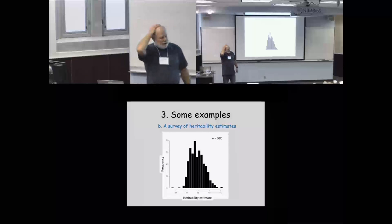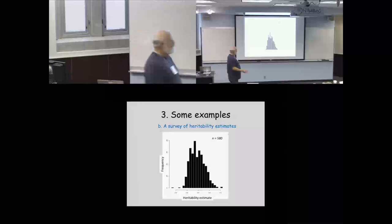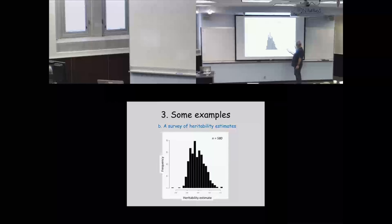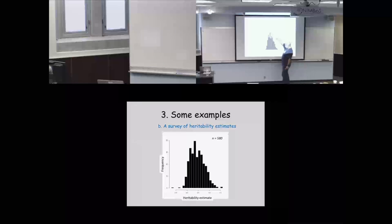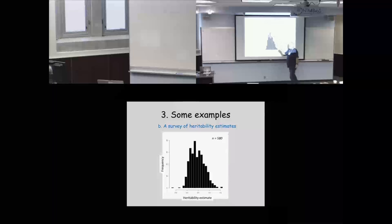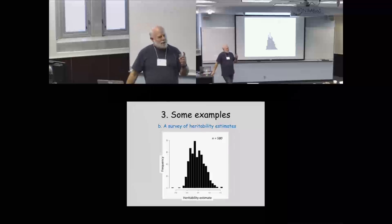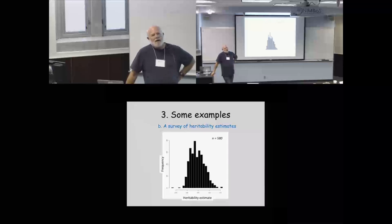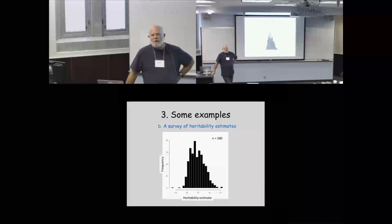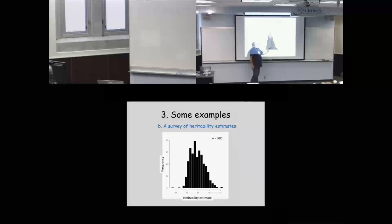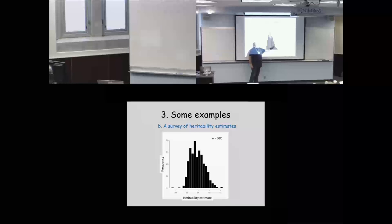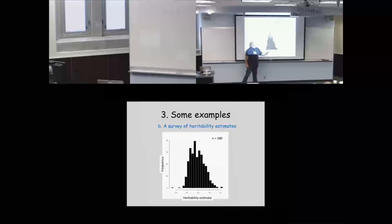More broadly, looking across the literature on morphological traits — data from Tim Esau and Derek Roth, a large sample of almost 600 studies — there's a lot of spread, but a modal tendency for morphological traits to have a heritability of around 0.4 to 0.5. This survey is very useful: if we want to model the evolution of the average trait over evolutionary time, we could take the modal or average value from this survey and use it, also examining intertaxonomic variation around that average.